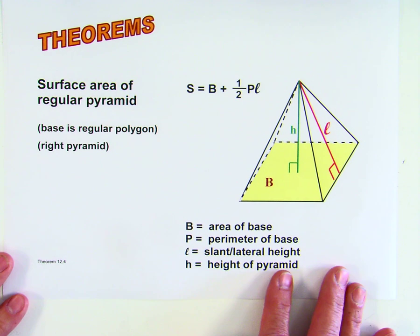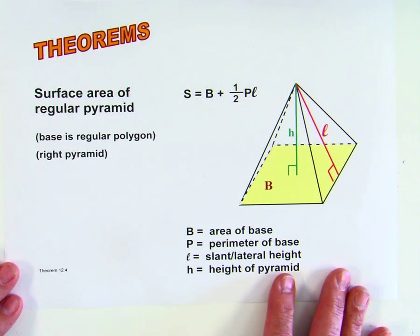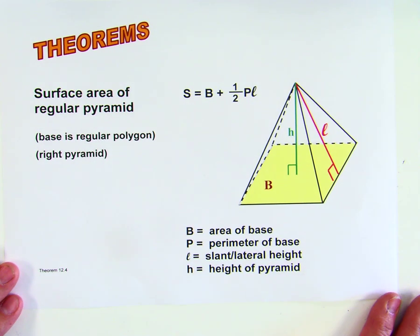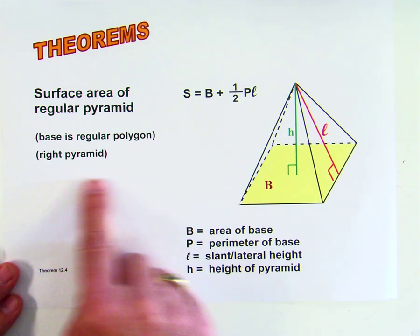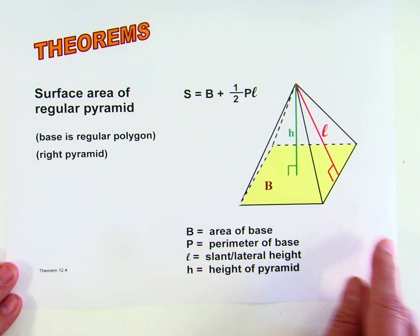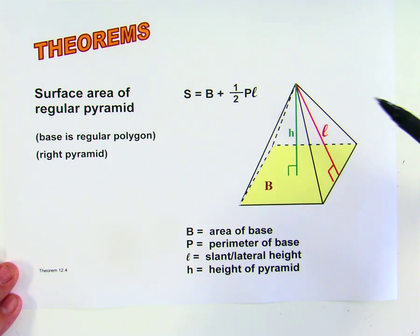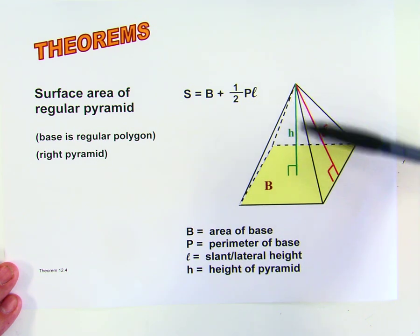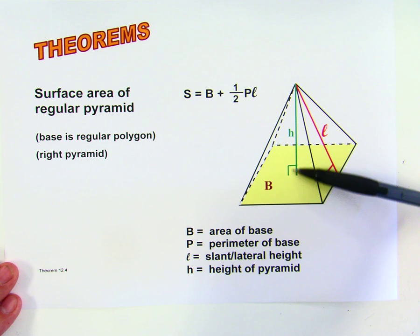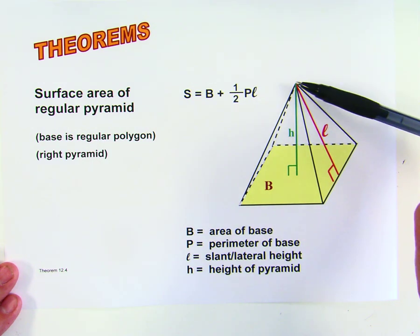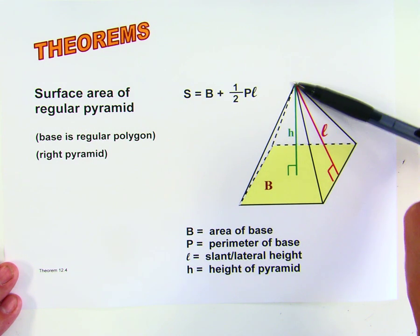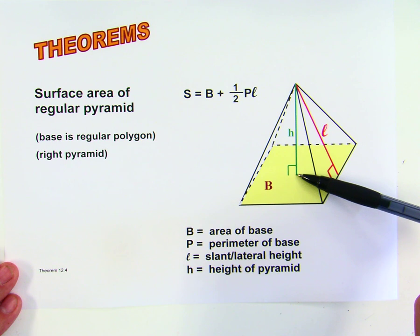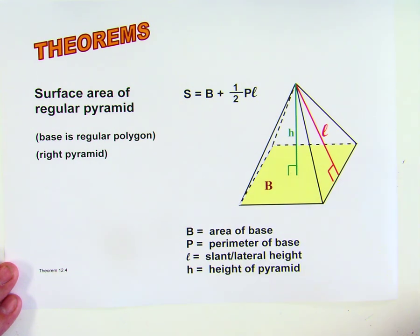And here it is. This is the surface area of a regular pyramid and it's also right, a right regular pyramid. That means the base is a regular polygon and it's right, which means that the altitude goes from the vertex to the center of the base, or the axis line from the vertex through the center of the base is perpendicular to the base.